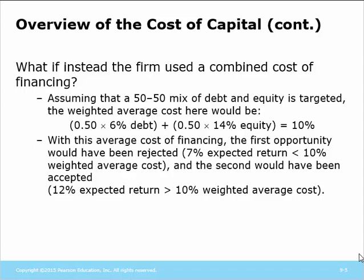The question is: we have these two projects — one's good, one's bad. But this company has two forms of financing, debt and equity. What if we did half the financing with debt and half with equity? The overall weighted average cost is 10%. Now the first opportunity would be rejected because 7% is less than 10%, but the second project would be accepted because its return is greater than the cost of financing.